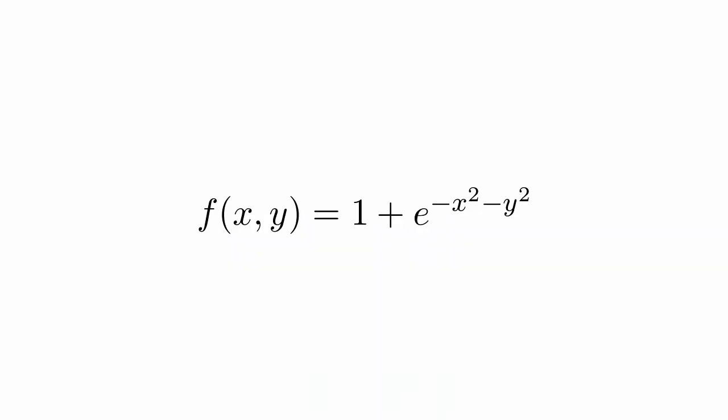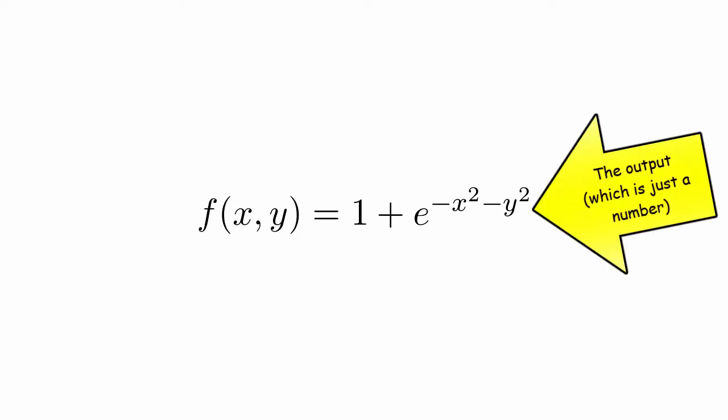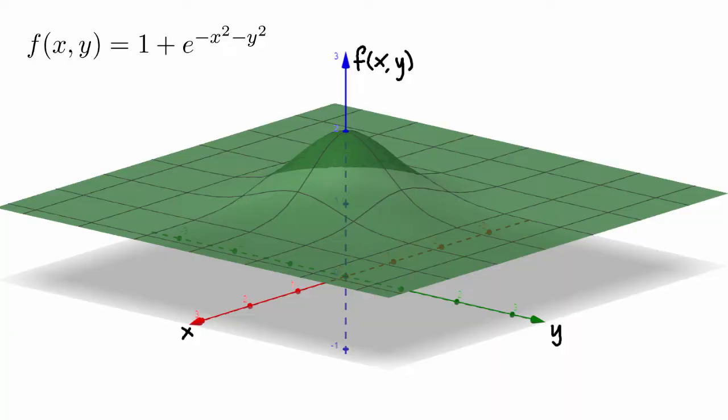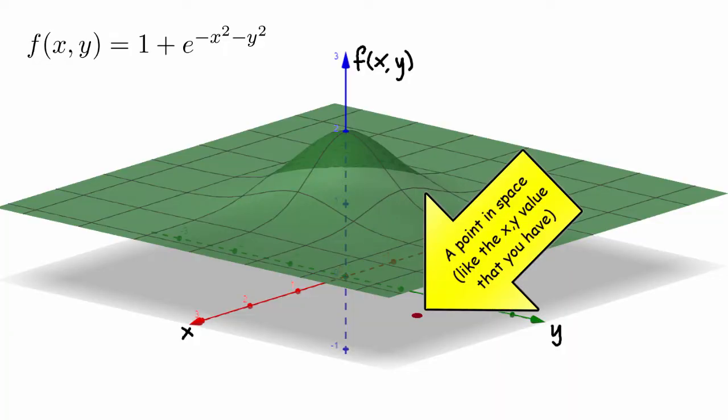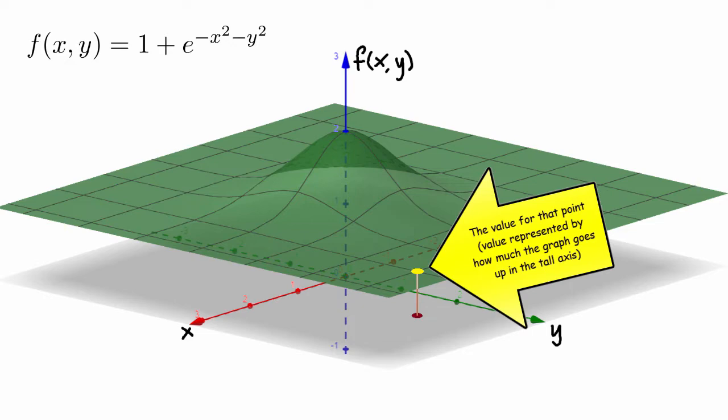Before we get going about flux and divergence, it's worth talking about what vector fields are. Regular scalar functions are pretty easy to deal with — they take different parameters, and if you put different numbers in, you get out some scalar value as an answer. Geometrically, you can think of all these parameters as points in some space, where each point is assigned a certain value depending on the function. That is basically a scalar function.